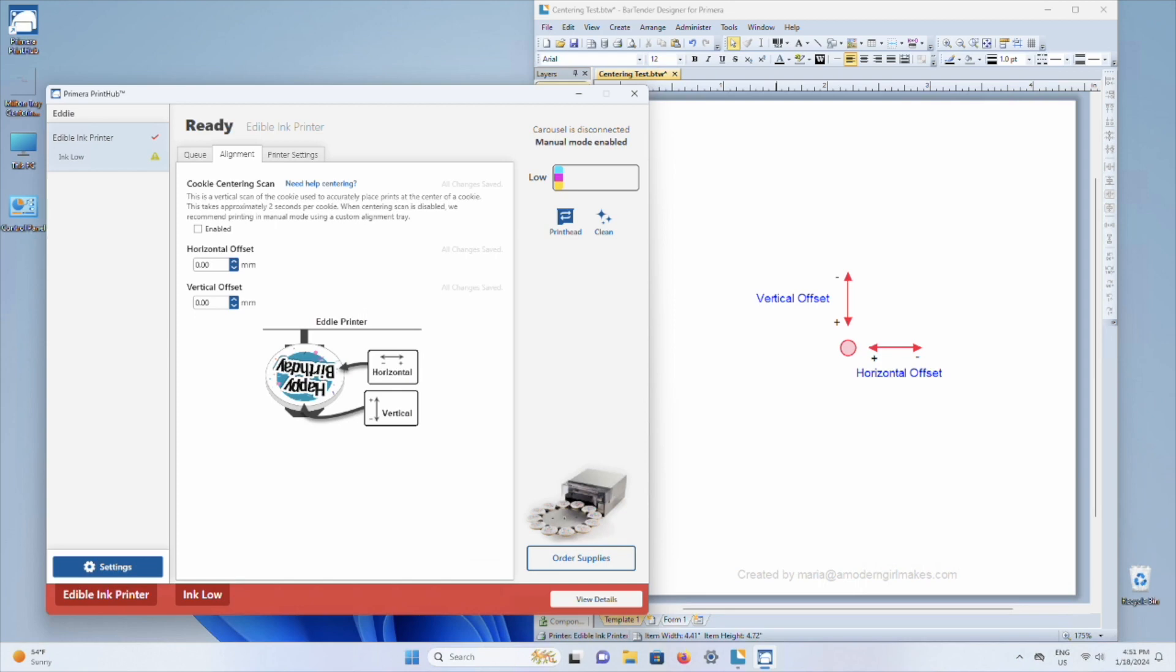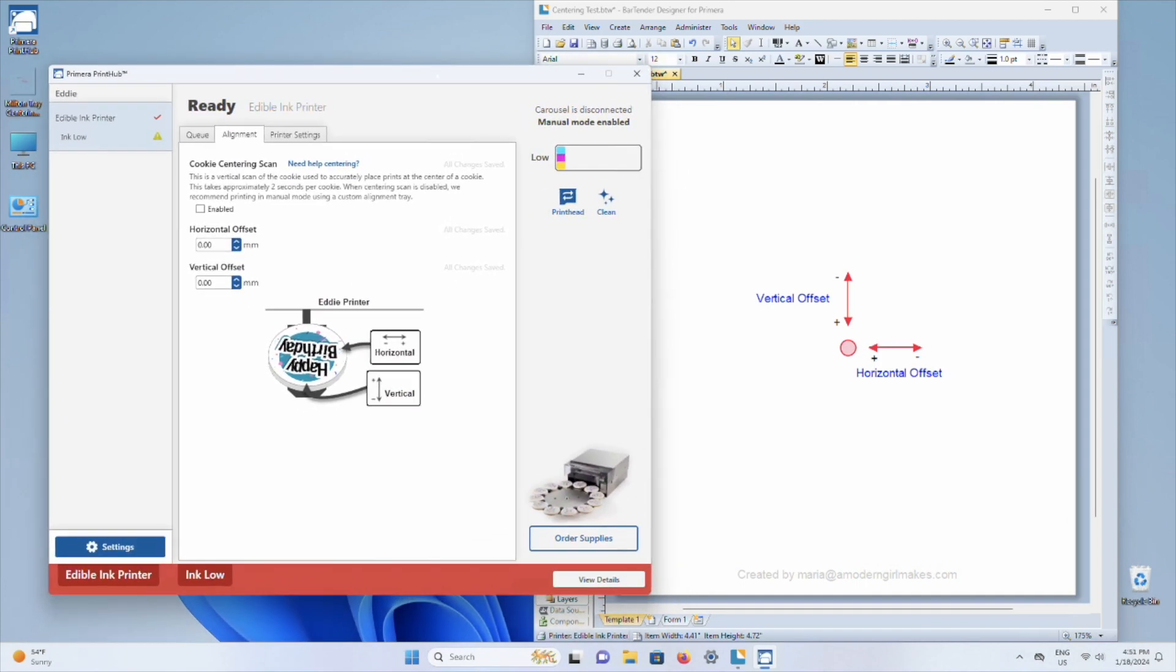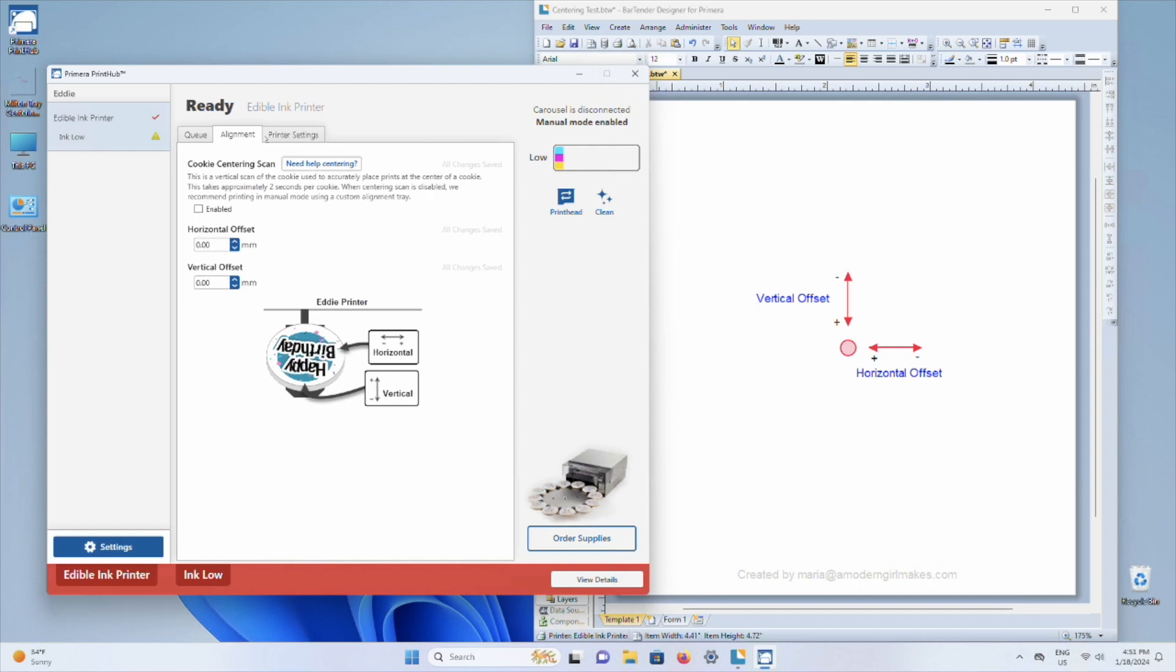All right. I have moved to my Windows machine and I have two windows open here. One is the Primera print hub and I have it opened to the alignment tab. Please disregard my low ink notification, but I'm not changing it until it actually runs out of ink. For those who've been at this for a bit, you know it can still keep going.